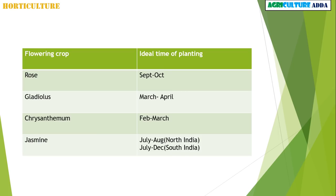These are important flowering crops and their ideal time of planting. For Rose: September–October. Ixora: March–April. Chrysanthemum: February–March. For Jasmine: North India — July–August, South India — July to December.